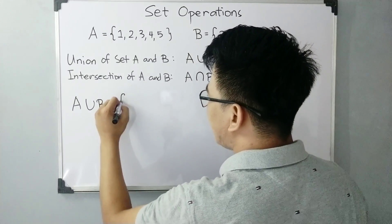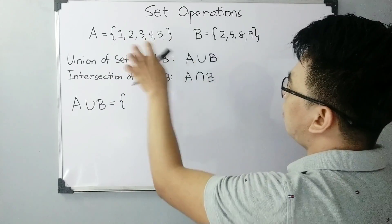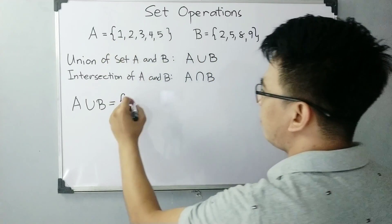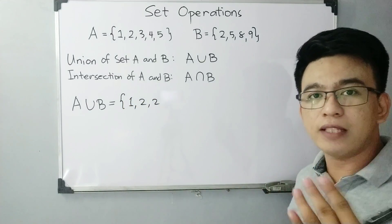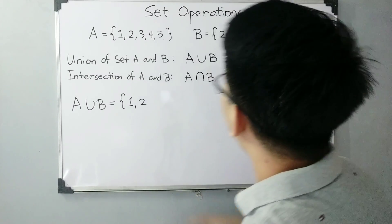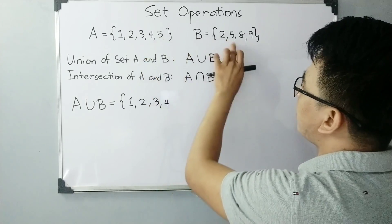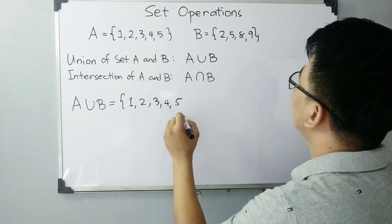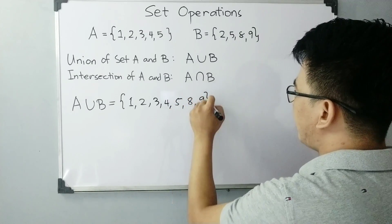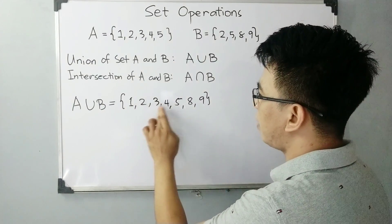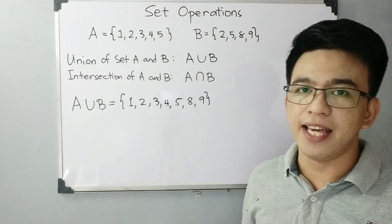It goes like this. For the union of set A and set B, get all the elements: we have 1, we have 2. Now instead of writing it twice, write it once. Followed by 3, and then 4. For 5, both sets have it, but write it only once — 5. Then 8, and 9. All in all, we have 1, 2, 3, 4, 5, 8, and 9 — seven elements for the union of set A and set B.